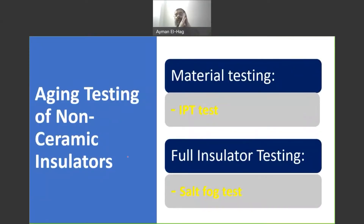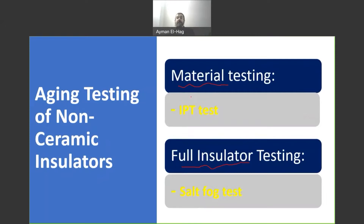When it comes to the test, we have two main classes of tests. The first one is called the material test and the second is the full insulator test. In the material test, we bring samples of the materials and test them without the full insulator. The most common type used to test the material is the IBT test, which is used to screen materials and evaluate their erosion and tracking resistance when subjected to dry band arcing.